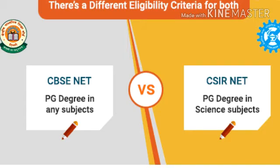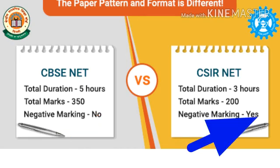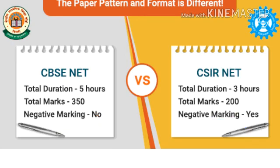CSIR NET conducts these exams for Chemical, Earth, Life, Physical, and Mathematical Sciences. There is no negative marking in CBSC UGC NET, but in CSIR NET, for all wrong answers, 1/4 marks will be deducted.